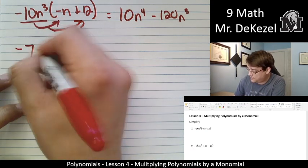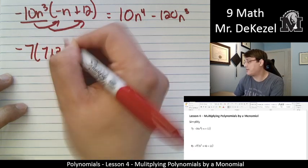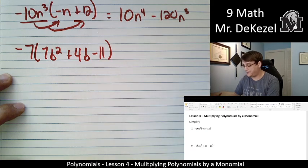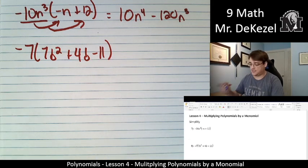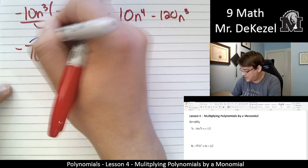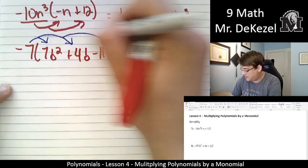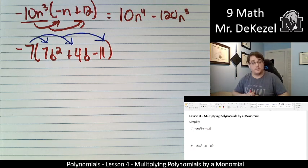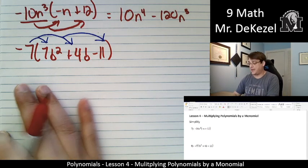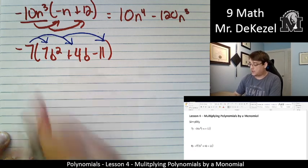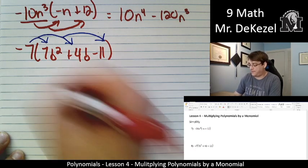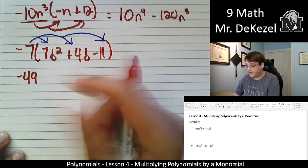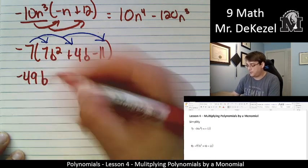We have minus 7 times 7b² plus 4b minus 11. We're going to take this minus 7, we're going to distribute it and multiply it against all of these. The distributive property means that we multiply what's in front of the brackets by everything in it. So minus 7 times 7, that's minus 49, and then we just bring the variable from the term with it, that's b².